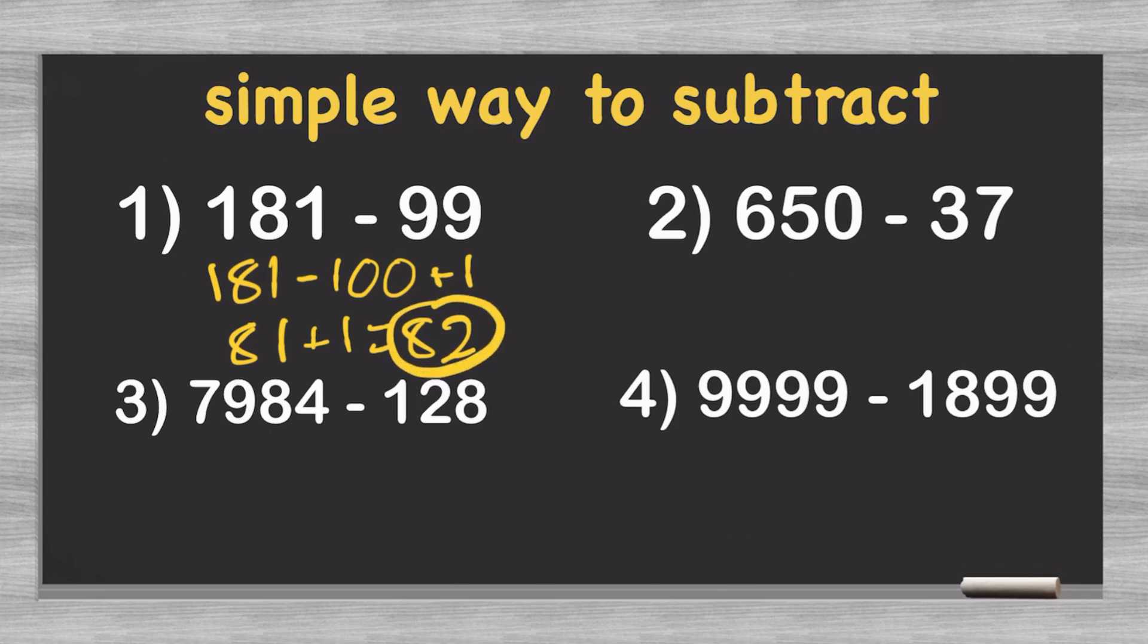For number 2 here, 650 minus 37, we can treat it as 650 minus 40. And then we can add 3. This gives us 610, which added 3 gives you 613.